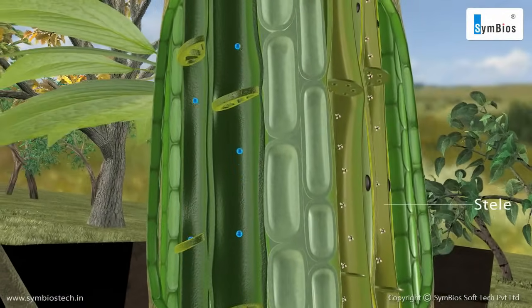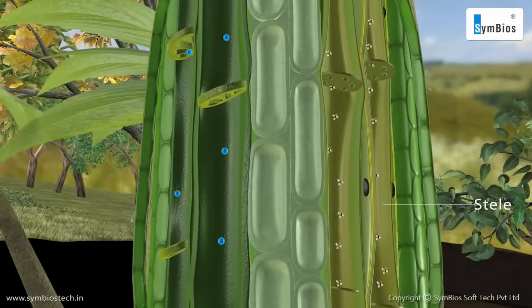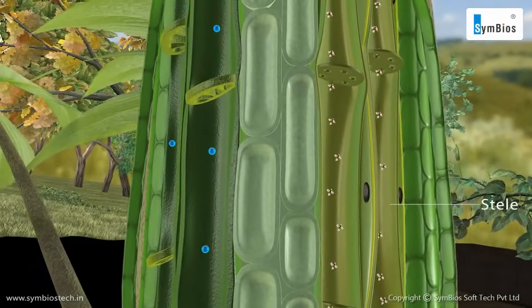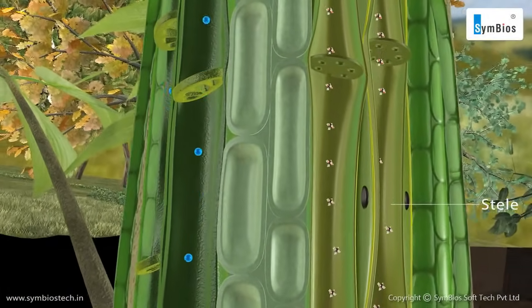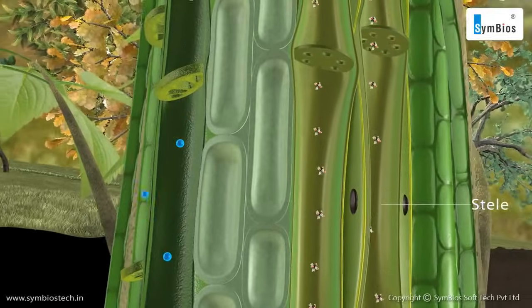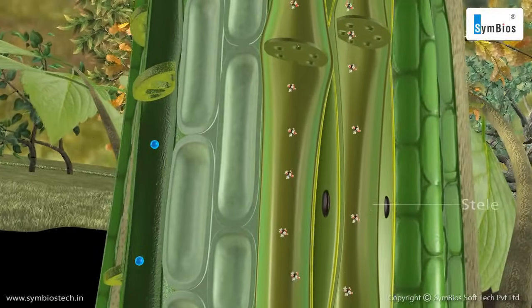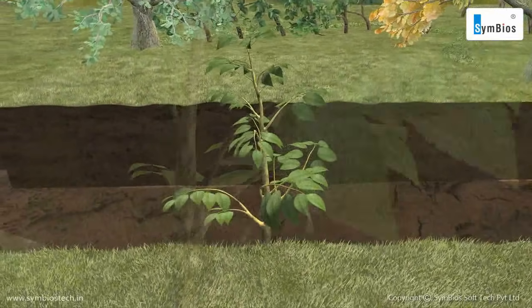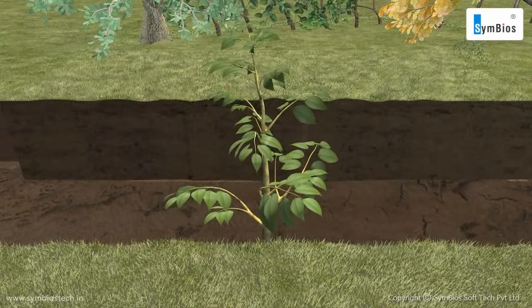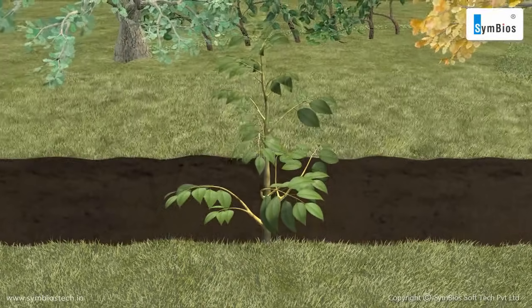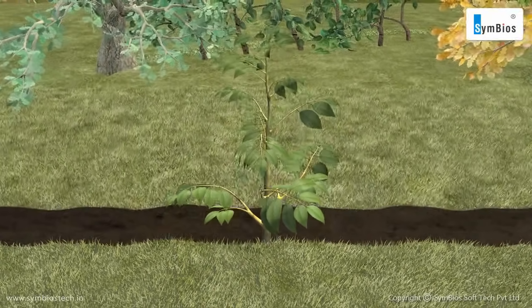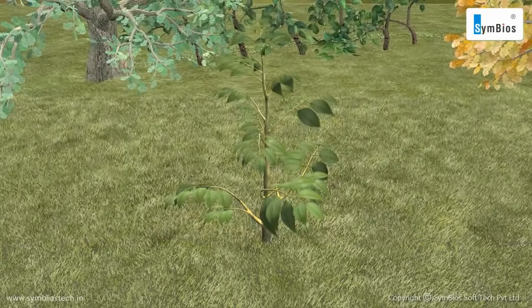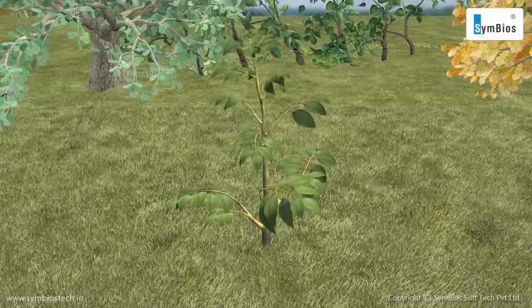Transport of food in phloem can be up or down the stem to reach all parts of the plant. Hence, the transportation in plants is the function of xylem and phloem cells.